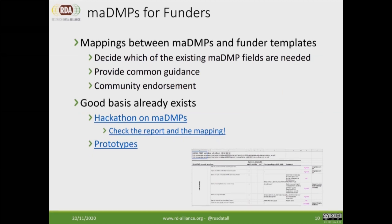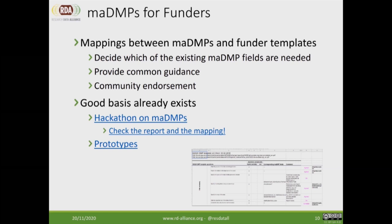One thing still open — and something the community needs to address — is mapping to funder templates. We have a set of fields in MA-DMPs and we just need to select which to transmit to the funder to be compliant with their requirements. We should provide common guidance, specifying, for example, which 10 fields are needed for Science Europe and which 20 for NSF. While developing the standard we analyzed the templates, so nothing is missing — it's just about having a consistent way of using the standard.